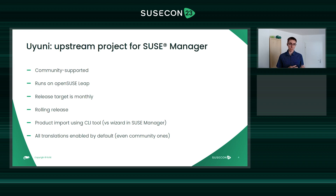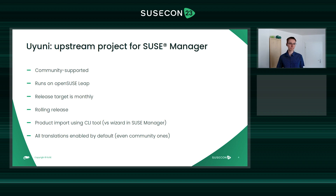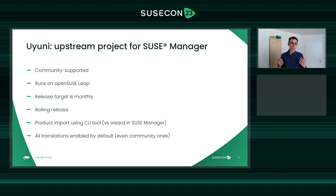Being an upstream project means it's fairly similar to the downstream project, of course, but there must be some differences. The first one is that SUSE Manager is a product by SUSE, supported by SUSE, and you can buy support for it, while Uyuni is community supported. Community supported doesn't mean no support — it just means you don't pay someone to ensure all your problems will be solved in a timely manner like you do with SUSE Manager. We from SUSE Engineering are still part of this community and we still support people, and we're not the only ones. There are also users and contributors who help others when they run into problems with Uyuni.